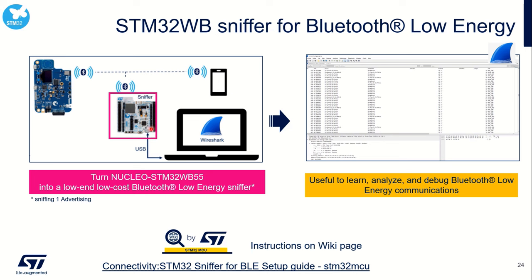A newer tool available on the STM32 wiki page is the BLE sniffer. It is based on the STM32WB55, a dual-core solution, with specific firmware enabling air logs using a Wireshark plugin. Get an STM32WB55 board, go to the STM32 wiki page, search for BLE sniffer, and follow the step-by-step instructions to install the Wireshark plugin and start capturing and debugging BLE communications over the air.